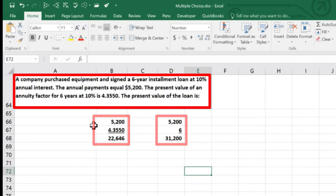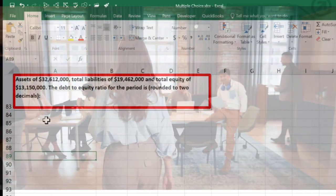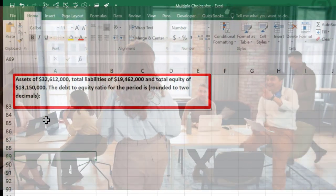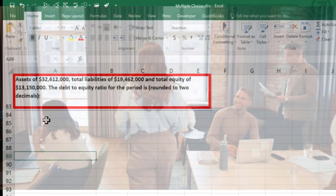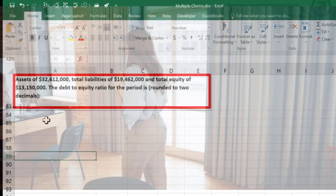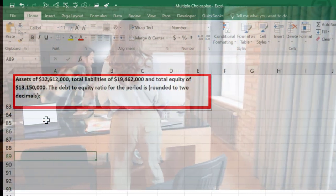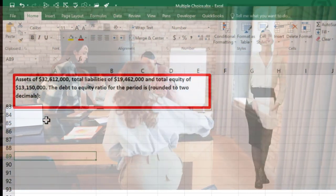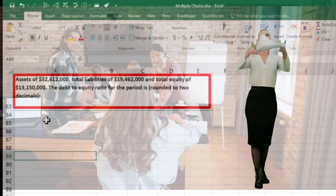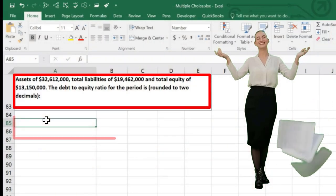Next one says assets of $32,612,000, total liabilities of $19,462,000, and total equity of $13,150,000. The debt to equity ratio for the period is what? So the debt to equity ratio is pretty easy to calculate. It actually tells you exactly what it is. It's debt over equity. It's a ratio, the debt compared to the equity.